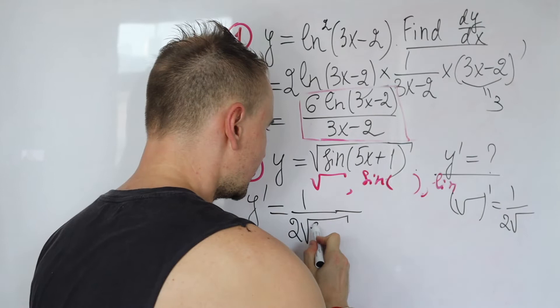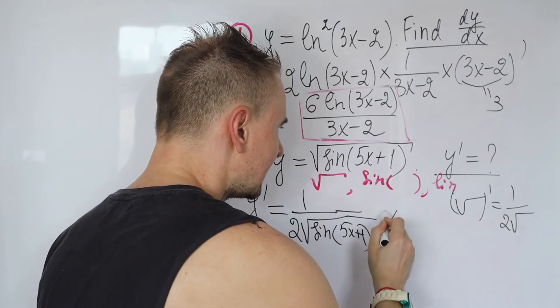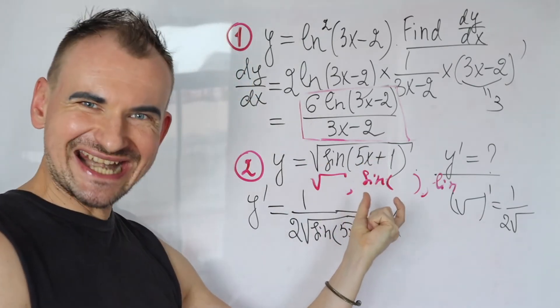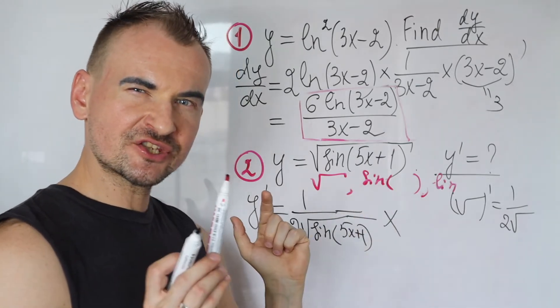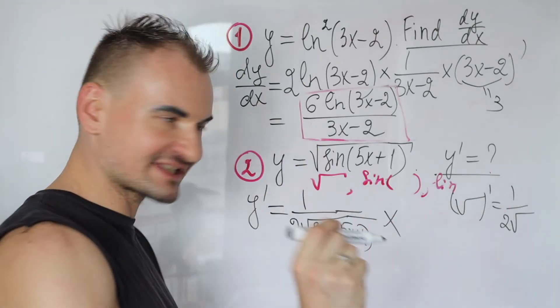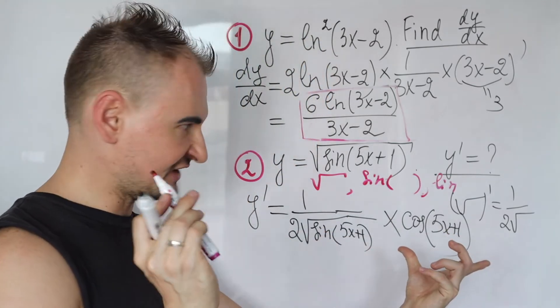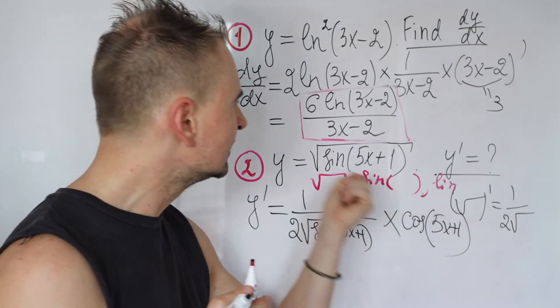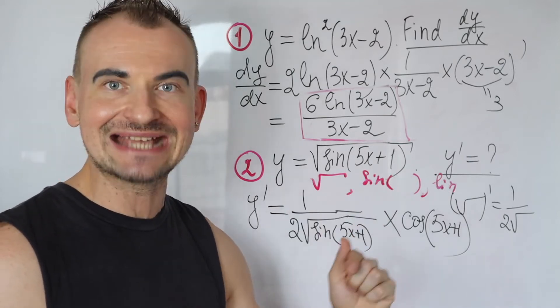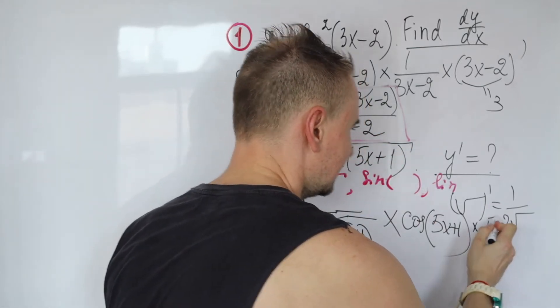Gets multiplied by now, sine goes next. Trig functions, so switch to trig derivative. Derivative of sine is cosine. Write it, cosine of 5x plus 1. We are not done yet. As we said, it's tempting to finish but not yet. You have linear, the last one we have to take the derivative of 5x plus 1. So the derivative of 5x plus 1 is going to be just 5, gets multiplied by 5.